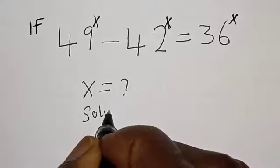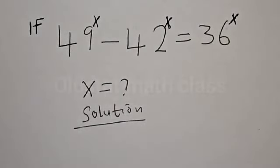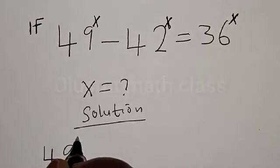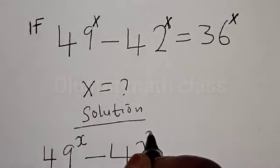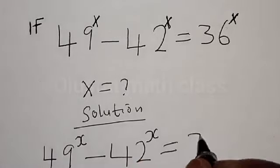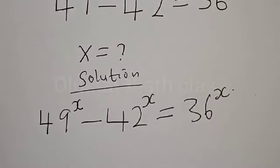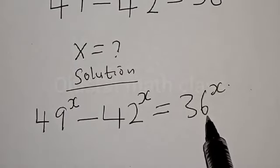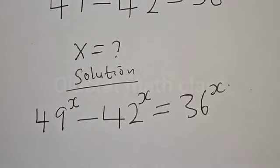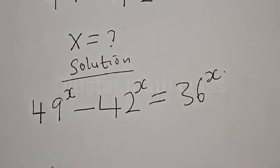Solution. We have the given equation: 49 raised to power s minus 42 raised to power s is equal to 36 raised to power s. If you look at this equation very well, 49 is a perfect square, 36 is also a perfect square, but 42 is not a perfect square. So let's divide both sides by 36 raised to power s.